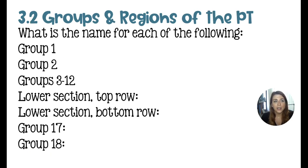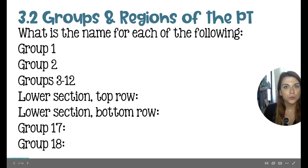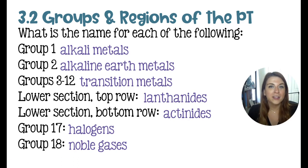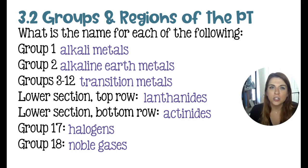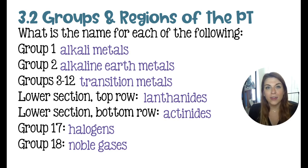The second question asks what are the names for each of the following sections of the Periodic Table. Group 1 are called the alkali metals. Group 2 are alkaline earth metals. The D block, or the center section, groups 3 through 12, are the transition metals. The lower section are lanthanides. The bottom row of the lower section are actinides. Group 17 are the halogens and group 18 are the noble gases.